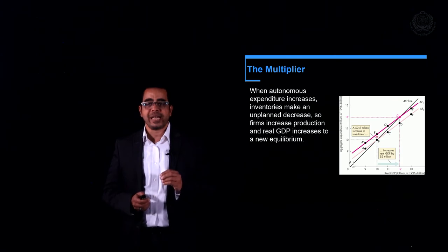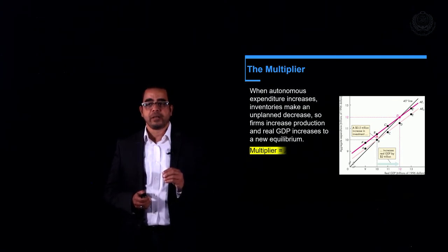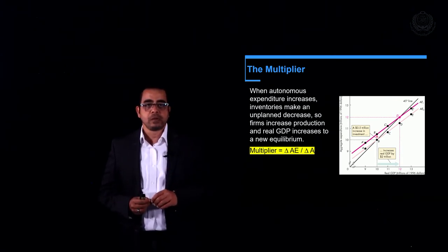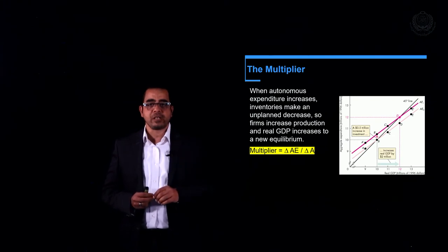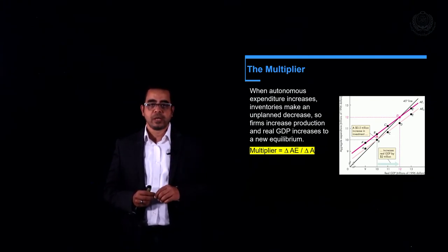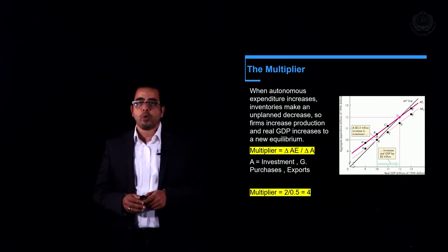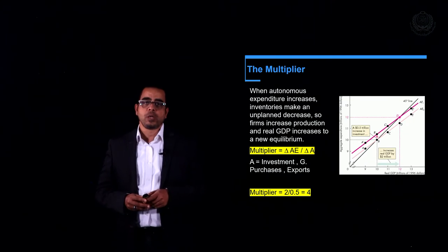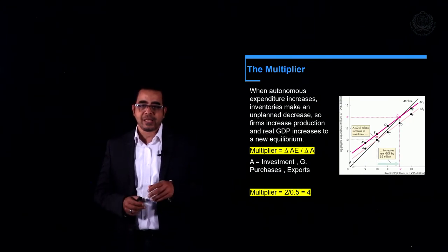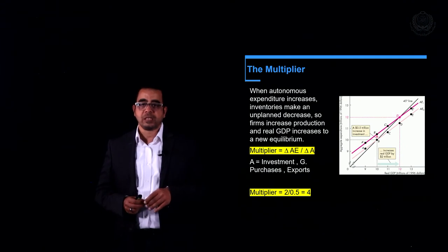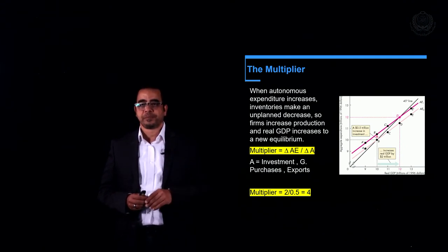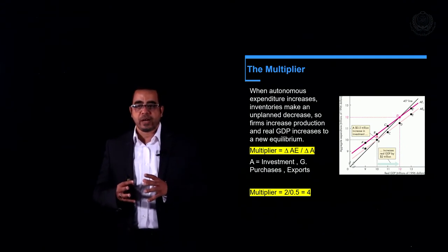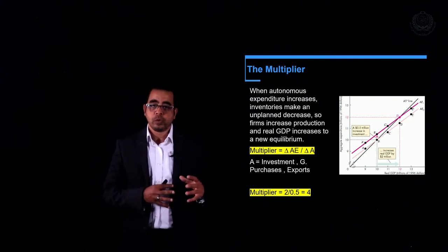How do we calculate the multiplier? By a simple equation: change in aggregate expenditure over change in autonomous expenditure. So in our case, it will be 2 over 0.5, which equals 4. As we can see, 0.5 has been multiplied 4 times, from 0.5 to 2 trillion.